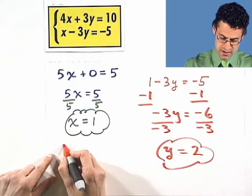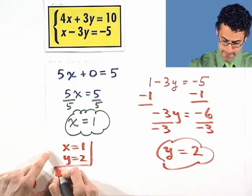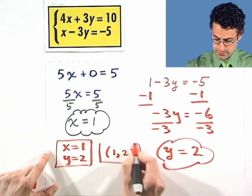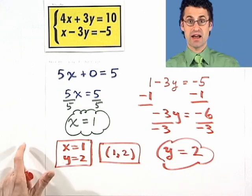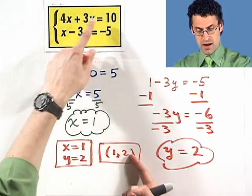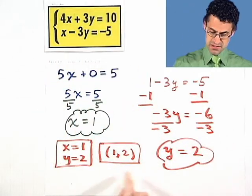And so, what's my final answer? x equals 1, y equals 2. Or if you want to write it as an ordered pair, 1 comma 2. And again, you can check your answer just by taking 1 for x and 2 for y in each of the equations, and show that in both cases, this solution satisfies both. That's the method of elimination.